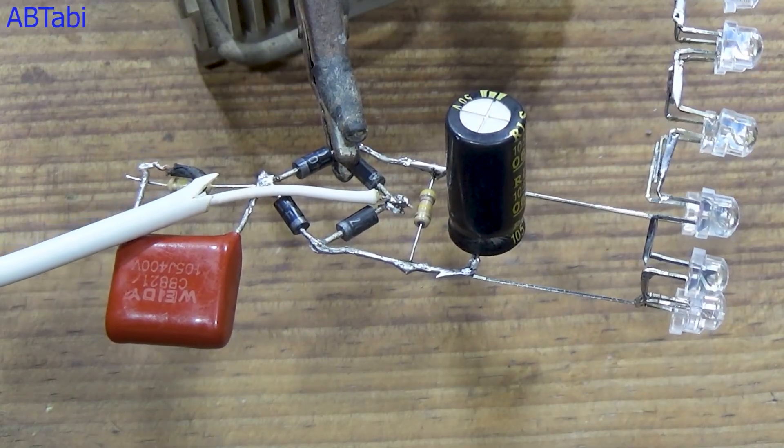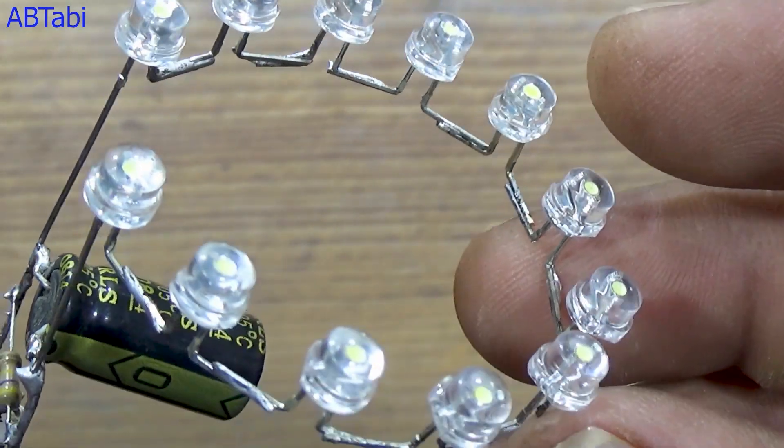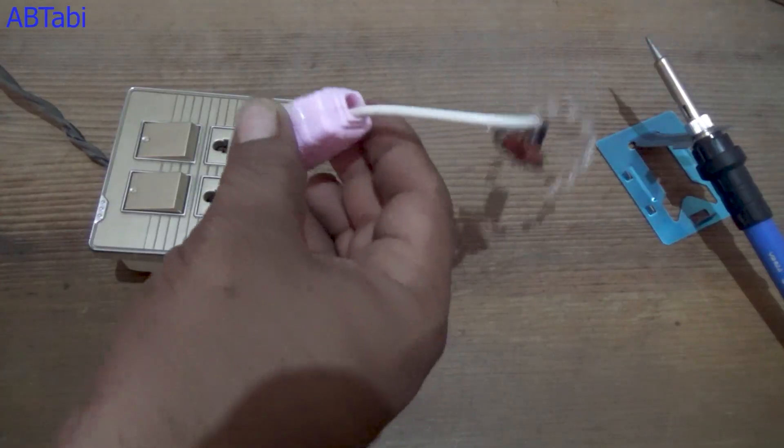Always be careful while working with AC voltage. Do not touch the circuit when power is on. Now let's power on the circuit. As you can see, the LED bulb lights up properly, showing that the circuit is working successfully.